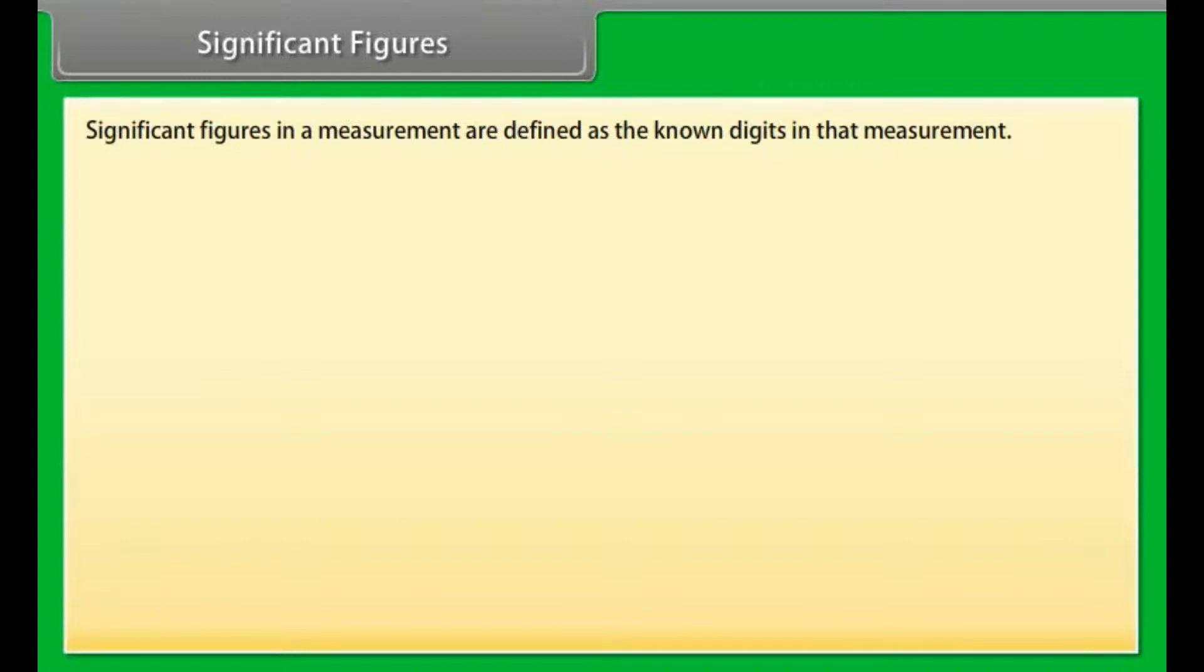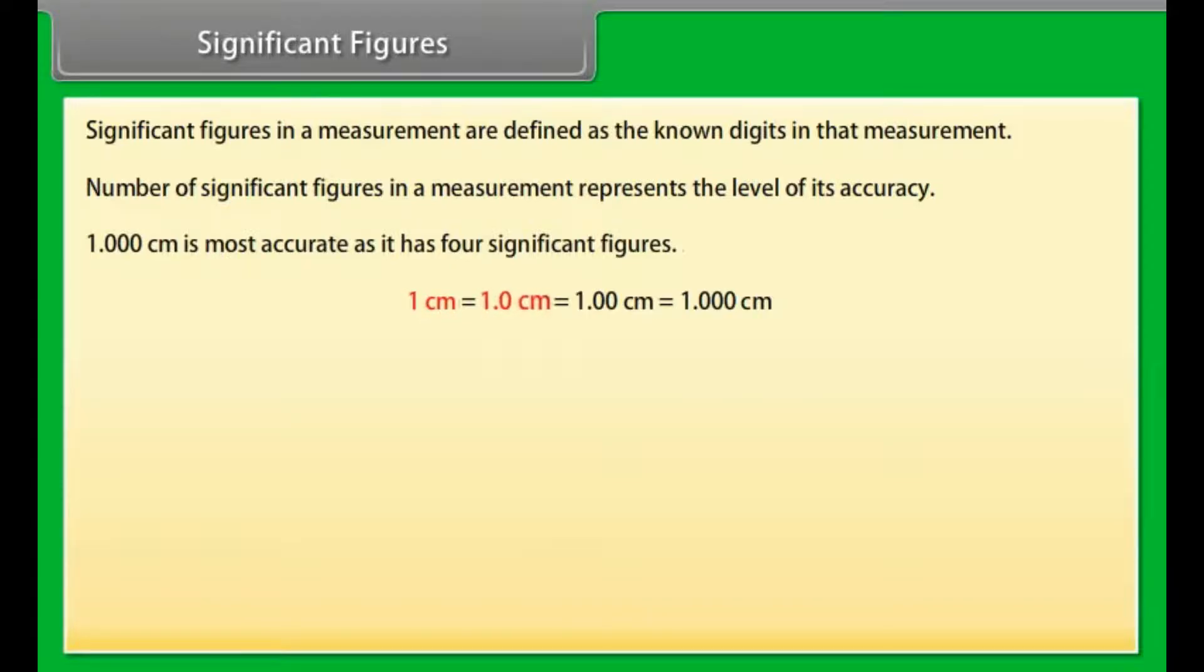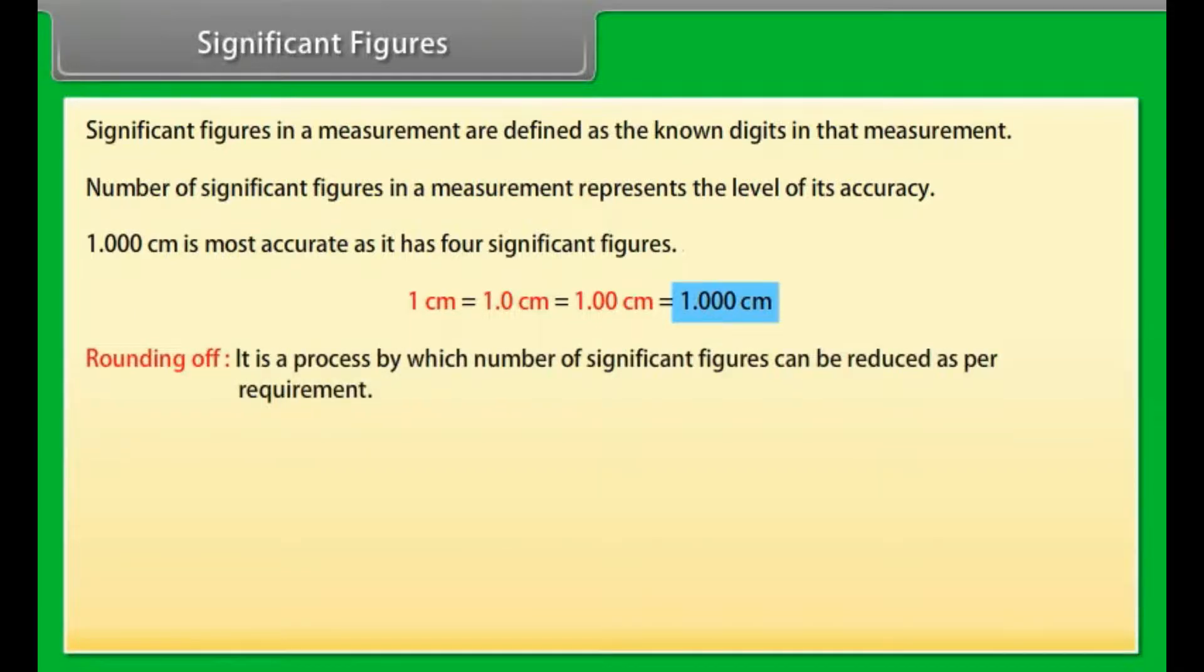Significant figures. Significant figures in a measurement are defined as the known digits in the measurement. Number of significant figures in a measurement represents the level of its accuracy. It means more the number of significant figures in a measurement, more accurate that measurement is. Let us take an example: 1.000 centimeter is most accurate as it has four significant figures. Rounding off: it is a process by which number of significant figures can be reduced as per requirement. Let us take an example: L = 2.6587 centimeters. On rounding off, L = 2.659 centimeters.